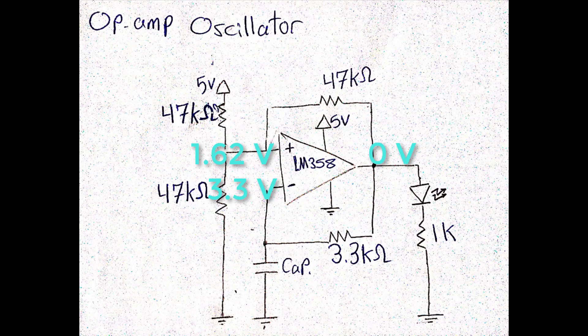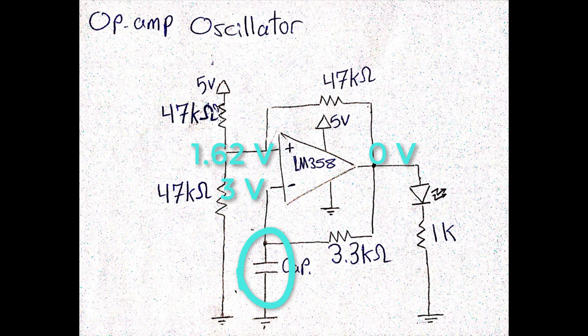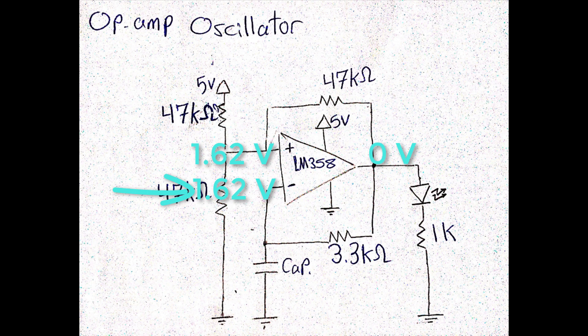So right now, as long as we have 0V at the output, the capacitor will be discharging, trying to reach 0V. But the comparator will not allow it, because at the instant the capacitor voltage reaches 1.62V, the comparator output will be pulled up to 5V, turning on the LED.